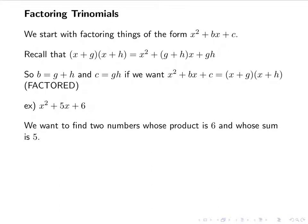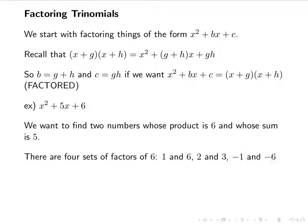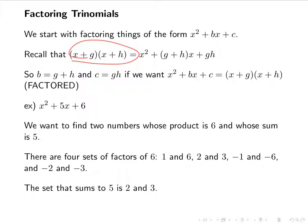For example, x squared plus 5x plus 6. I want two numbers that multiply to 6 and add to 5. We start with factors of 6 because there are far fewer factors of 6 than pairs of numbers that add to 5. There are four sets: 1 and 6, 2 and 3, negative 1 and negative 6, and negative 2 and negative 3. I want the pair that adds to 5, so I want 2 and 3. That gives x plus 2 times x plus 3.